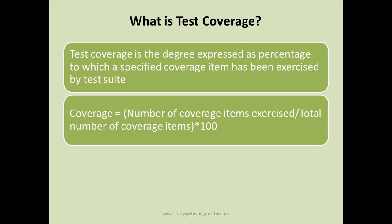For example, suppose the total coverage items are 100 — you have 100 requirements — and the requirements that have been tested so far are 80. So 80 divided by 100, multiplied by 100, gives you 80 percent coverage.